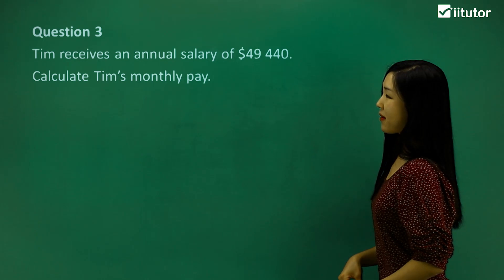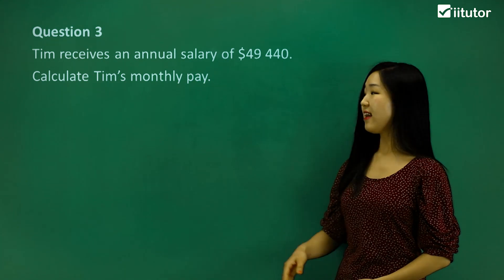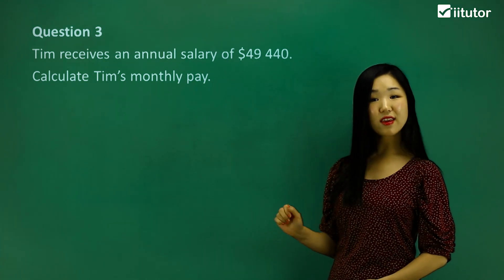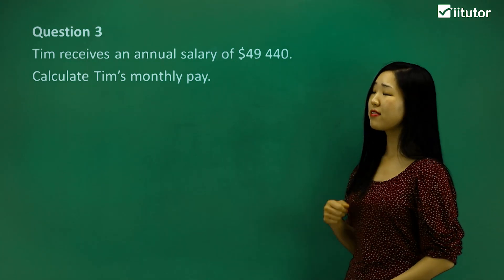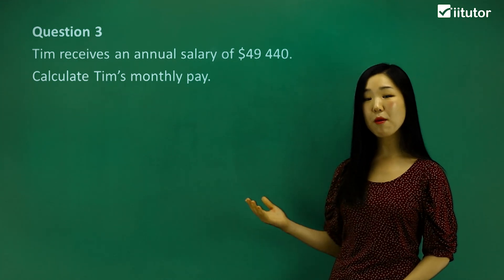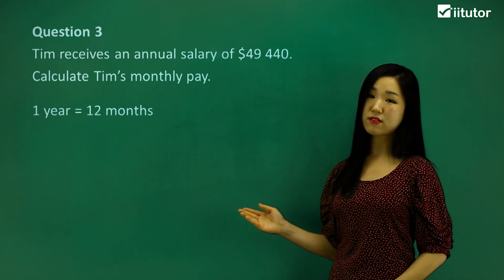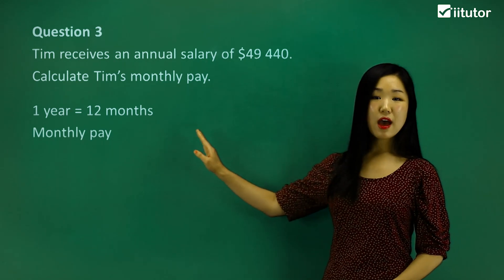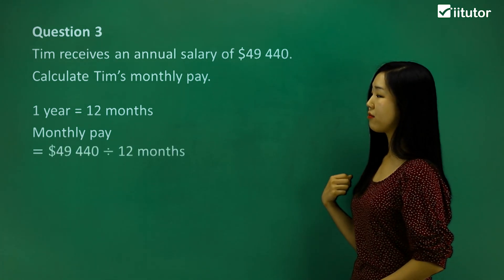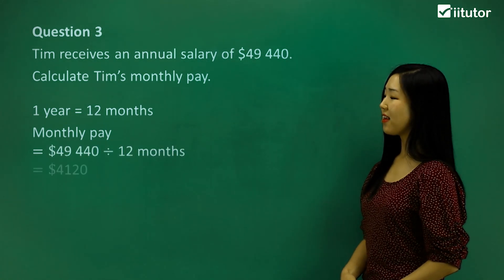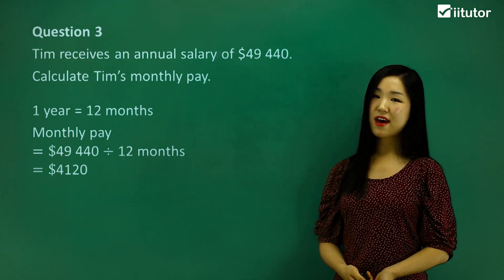Question three: Tim receives an annual salary of $49,440. Calculate Tim's monthly pay. The key word here is 'monthly.' There are 12 months in a year, so to calculate Tim's monthly pay we simply divide his annual salary by 12. Put that in your calculator and you should get $4,120 — Tim's monthly salary.